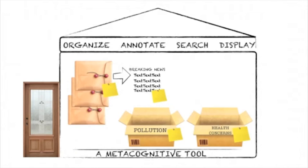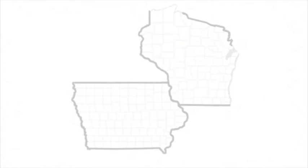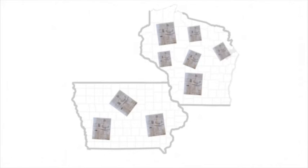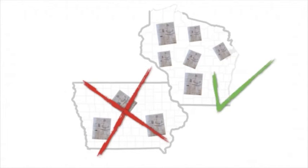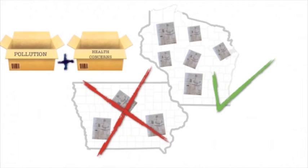The third major function of QDA software is searching. When you code, you basically create an index of your data. You can tell the software to display all the sections of data that you coded as pollution, or display all the sections about pollution and health concerns. The metadata you attach to your envelopes comes in handy here — for example, you could tell the program to search only in newspaper articles published in Wisconsin, as opposed to those published in Iowa. The program can then show you all sections in which newspapers in Wisconsin deal with pollution and health concerns for that specific subset of your data.